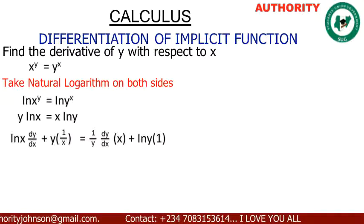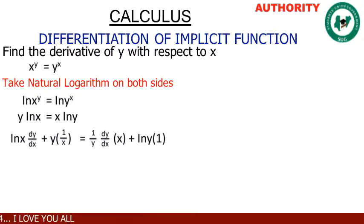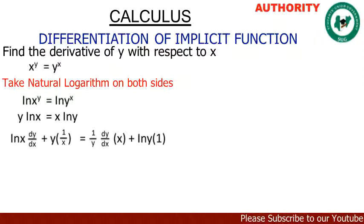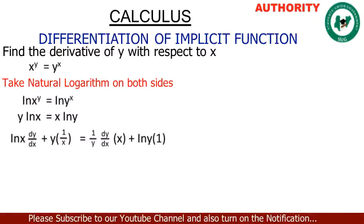On the right side, x·ln(y) also requires the product rule. The derivative of x gives 1, times ln(y), plus the derivative of ln(y) which gives 1/y times dy/dx, then multiplied by x.